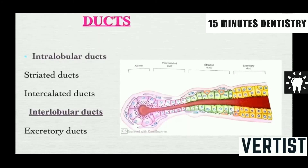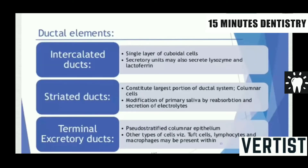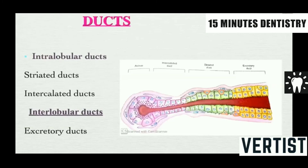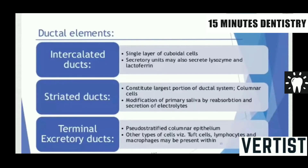The ductal system consists of intralobular and interlobular ducts. The intralobular ducts include intercalated ducts lined by a single layer of cuboidal cells, which may also secrete lysozyme and lactoferrin. The striated ducts are composed of columnar cells and constitute the largest portion of the ductal system. They modify primary saliva by reabsorption and secretion of electrolytes. Finally, the terminal excretory ducts are lined by pseudostratified columnar epithelium.